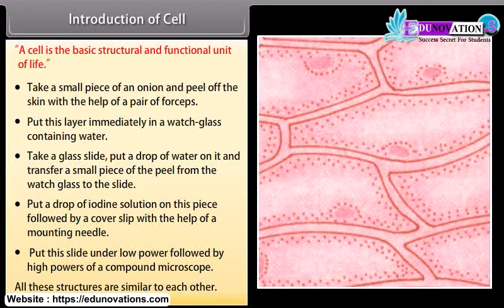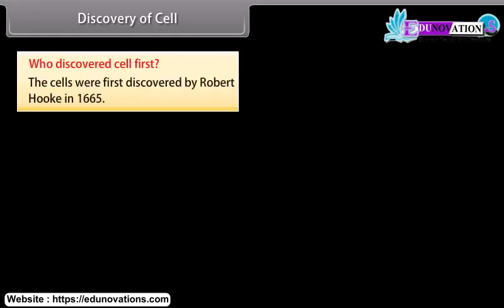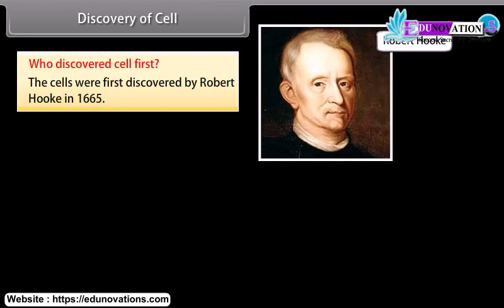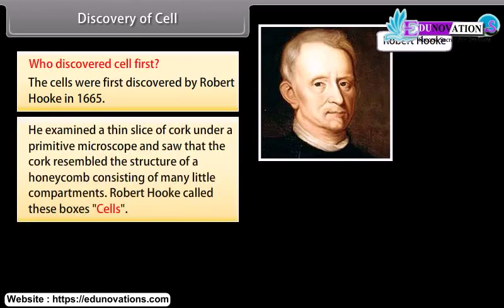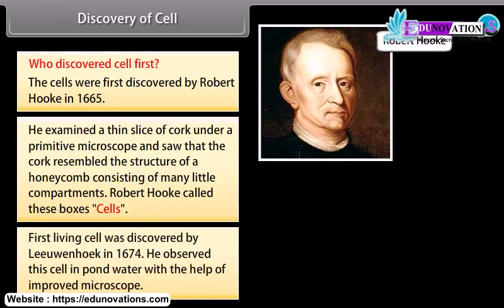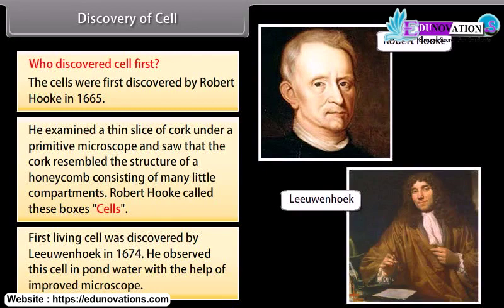Who discovered the cell first? Cells were first discovered by Robert Hooke in 1665. He examined a thin slice of cork under a primitive microscope and saw that it resembled the structure of a honeycomb consisting of many little compartments. Robert Hooke called these boxes cells. The first living cell was discovered by Leeuwenhoek in 1674, who observed it in pond water with the help of an improved microscope.